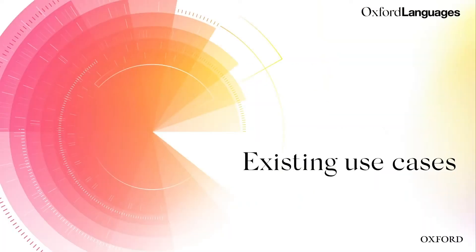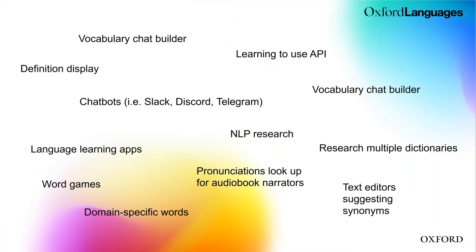To summarize some existing use cases — many of you could already be Oxford API users, and many might be curious and want to get started. There are very simple front-end use cases, such as definition display. For example, if you're a developer for an e-reader or learning management platform and you want to display definitions or translations for words, this is something the Oxford API can power very easily and effectively.